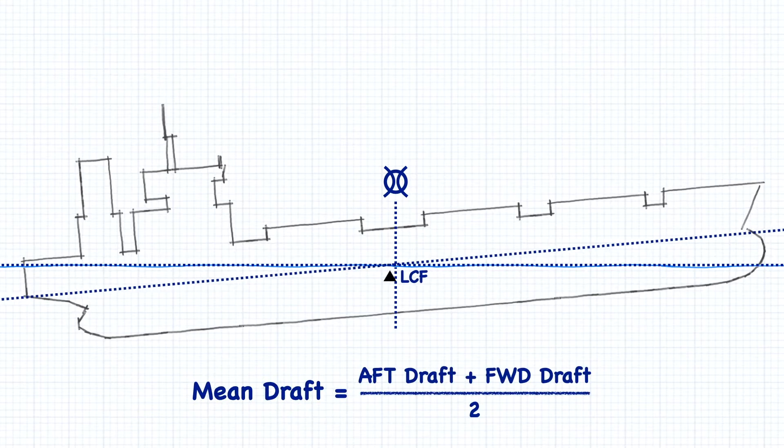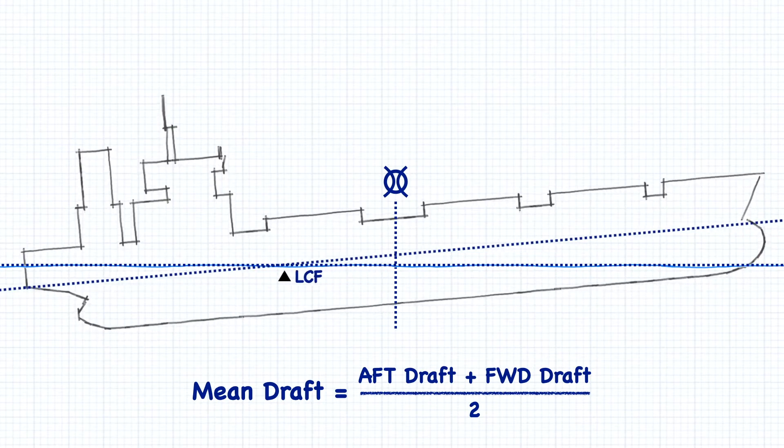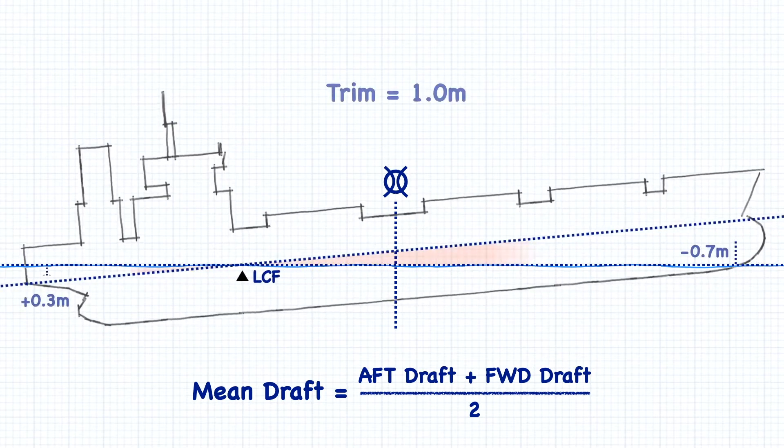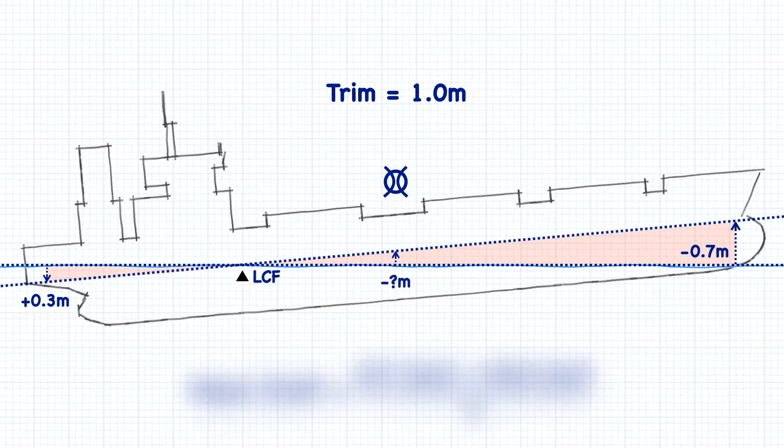But we've already seen how moving the position of the center of flotation can have an effect on the drafts. The mean draft is no exception. You can see that when the center of flotation is not at midships, the midship draft is going to change, and the mean draft is no longer the average of the two drafts.